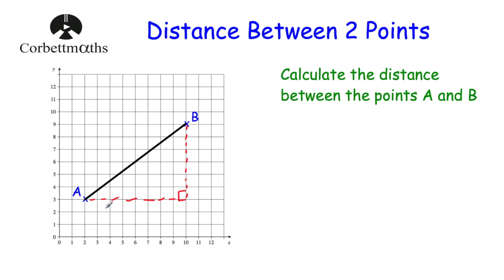In terms of the base of the triangle, the point A is 2 across, so we're going from 2 across to 10 across, so altogether we're going 8 across — so the length of that side is 8. And then in terms of the height of the triangle, we're going from a height of 3 up to a height of 9, so we're going up another 6, meaning the length of this side is 6. So this triangle has got a base of 8 and a height of 6, and we want to find the length of the diagonal — let's label that side AB as X.